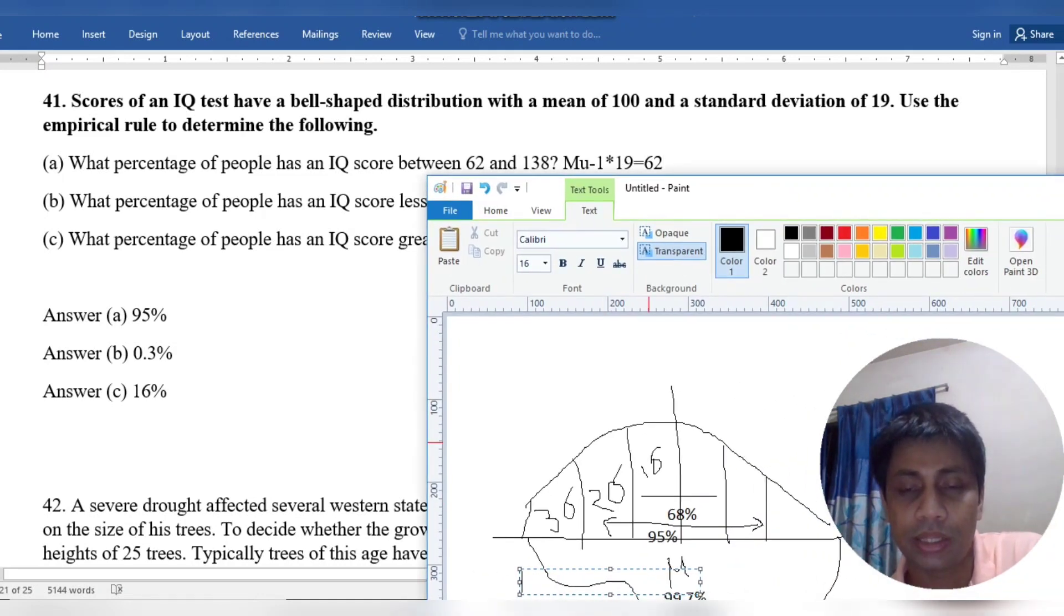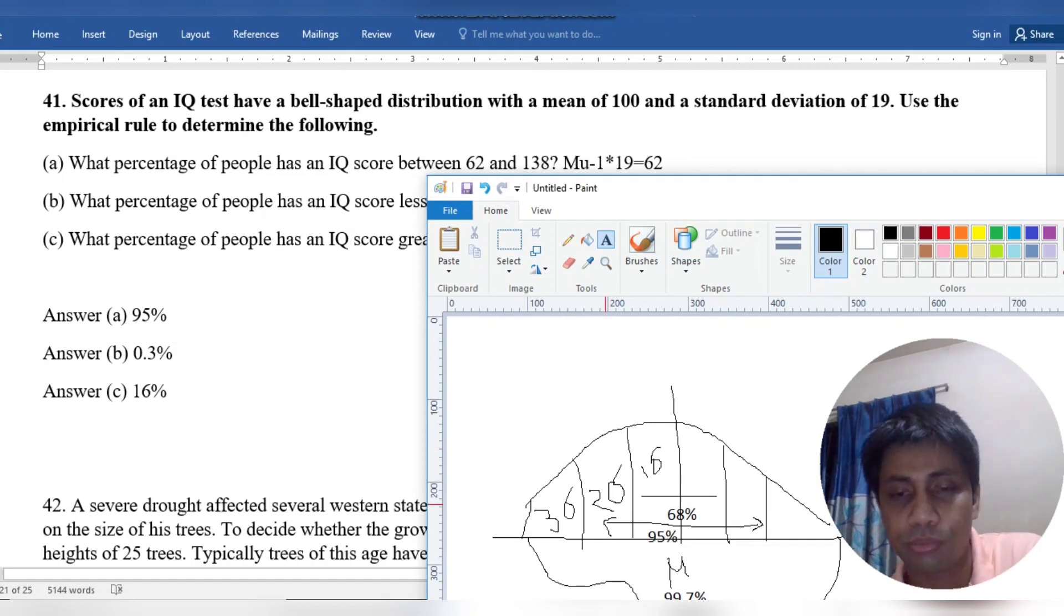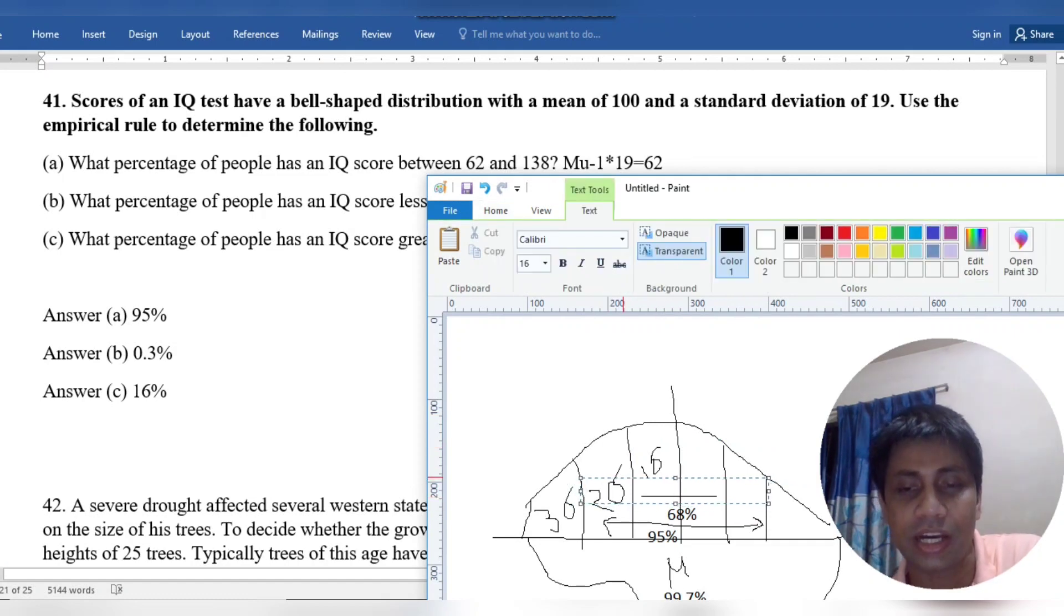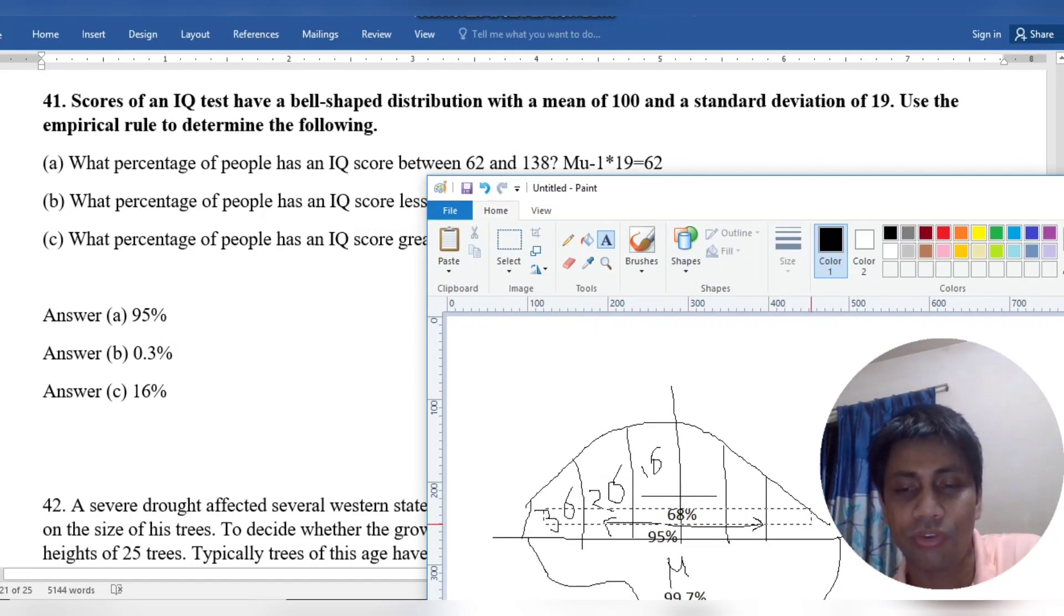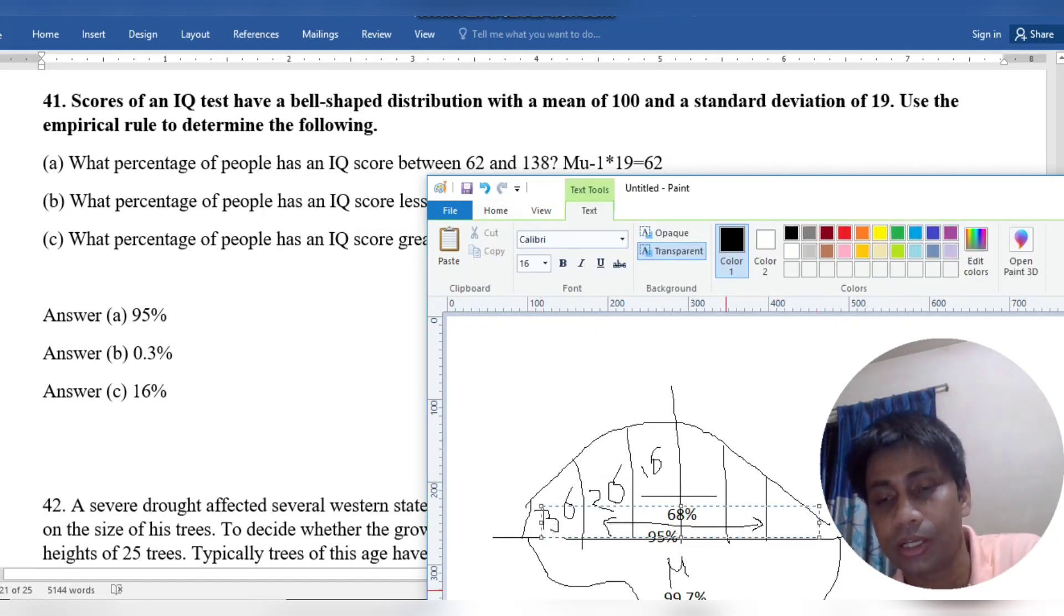If the result falls in that region, then that is 68 percent. If it's within two sigma limits and falls in this region, then it is 95 percent. And if the fall is in this region, then that will be 99.7 percent.